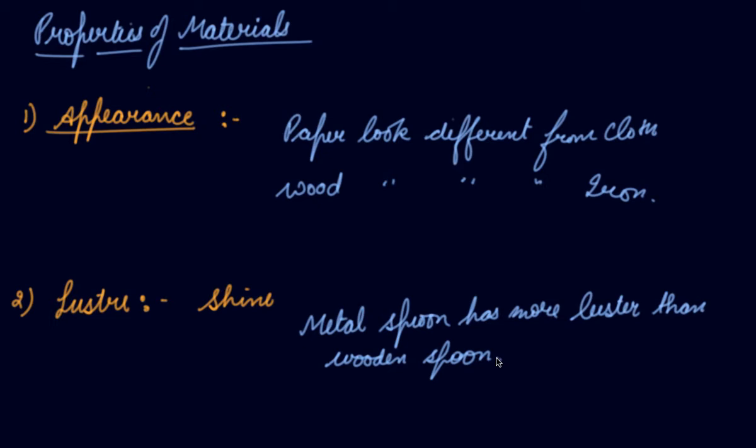For example, if an iron rod is exposed to air and moisture, it will lose its shine. We can use sandpaper to remove the top layer, and then you will see that it is lustrous. So metals can be classified on the basis of their luster.